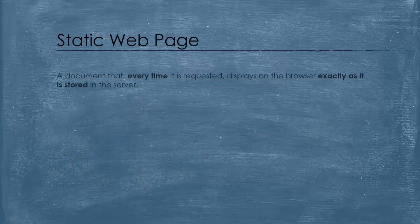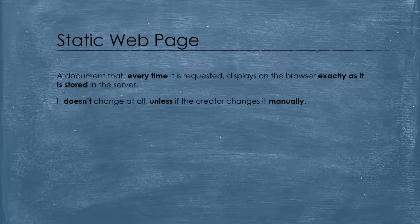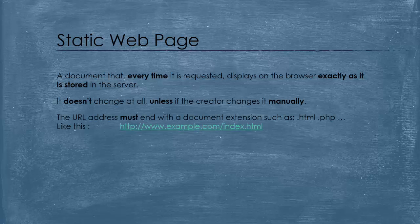What is a static web page then? A static web page is a document that every time it is requested, it displays on the browser exactly as it is stored in the server — the place where the document physically exists. It doesn't change at all, unless the creator changes it manually. The URL address of a static web page must end with a document extension, such as .html or .php. If it doesn't, then it is not a static web page.